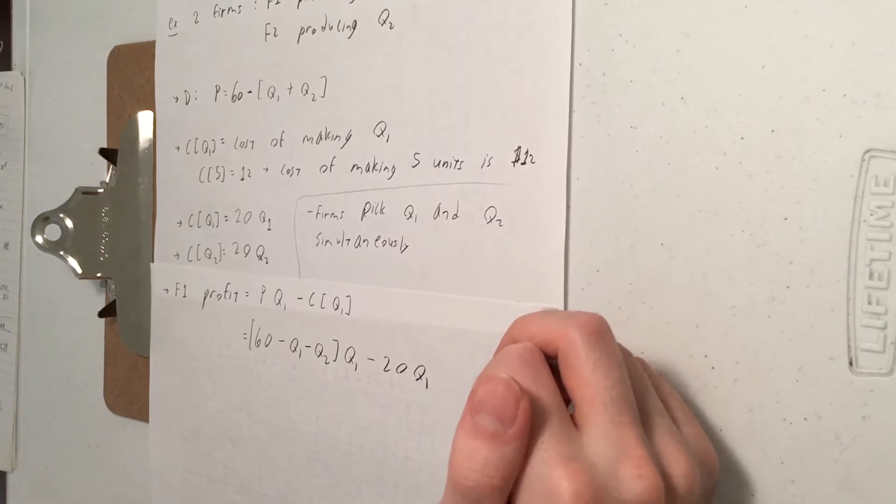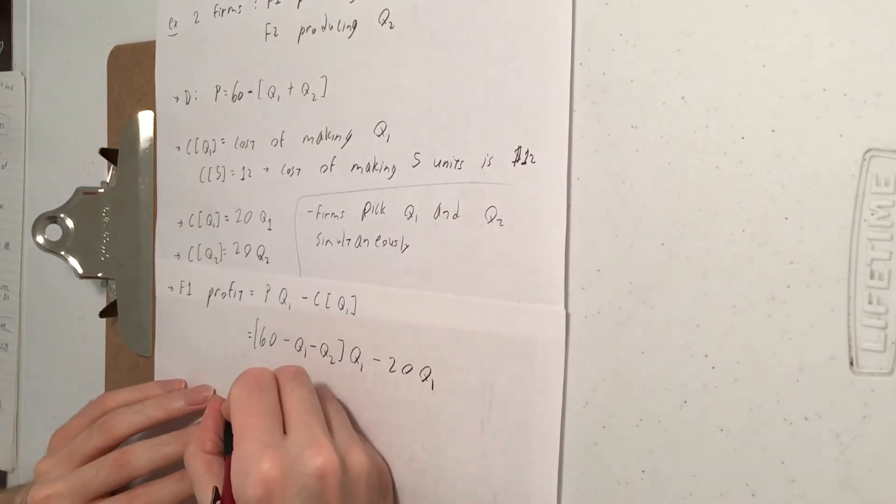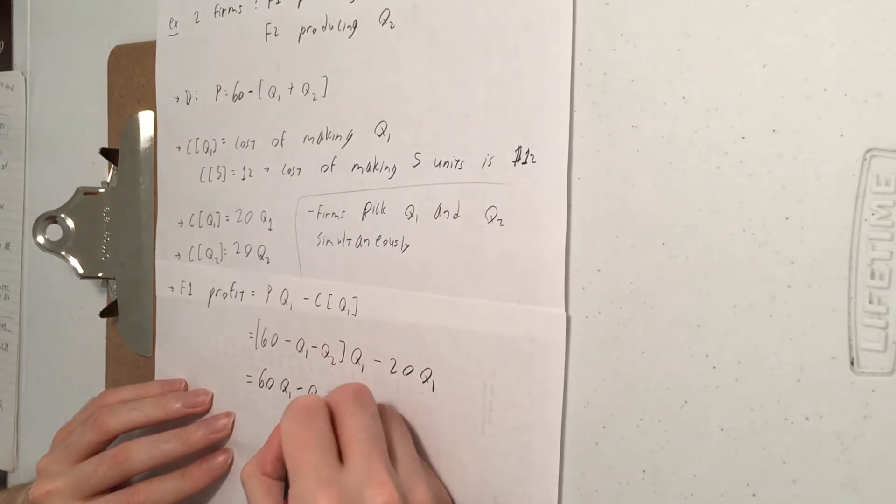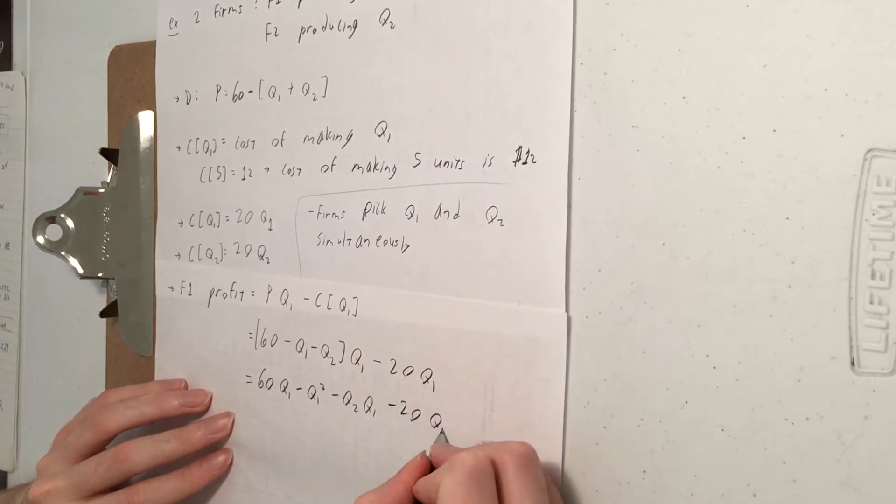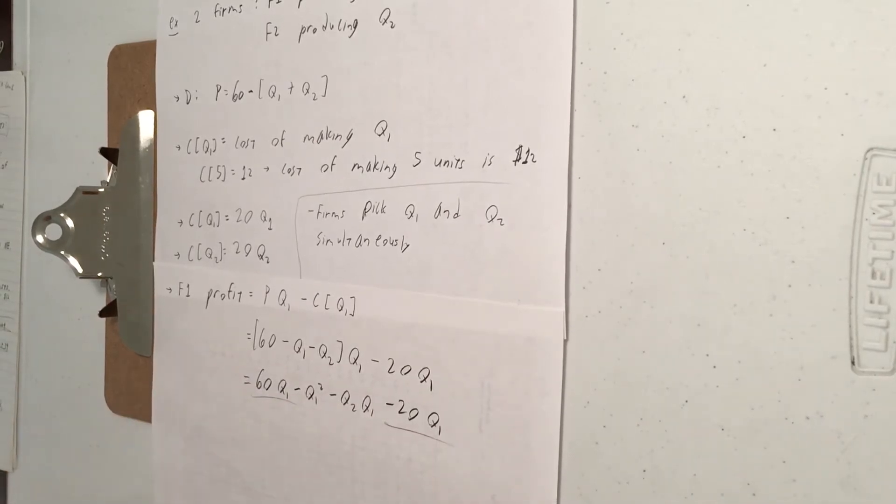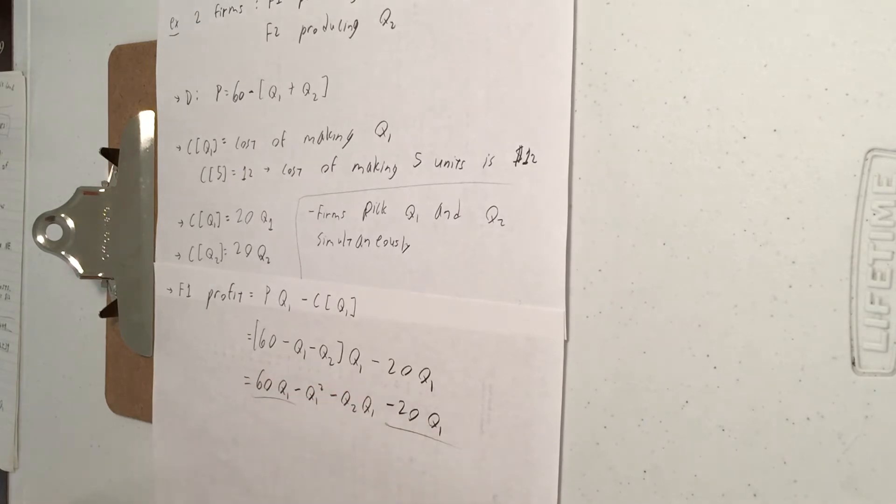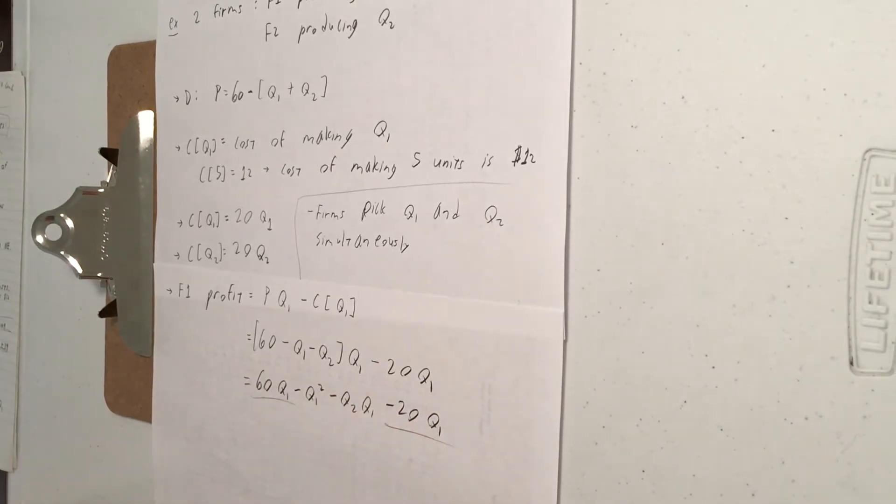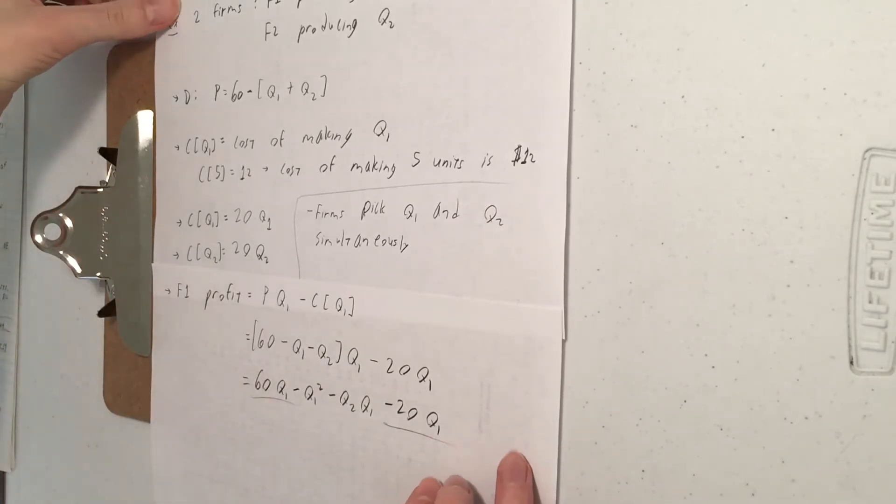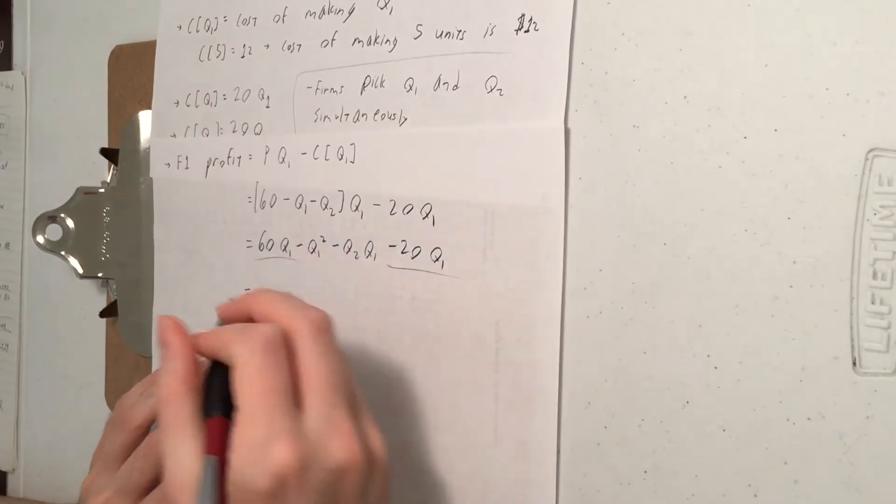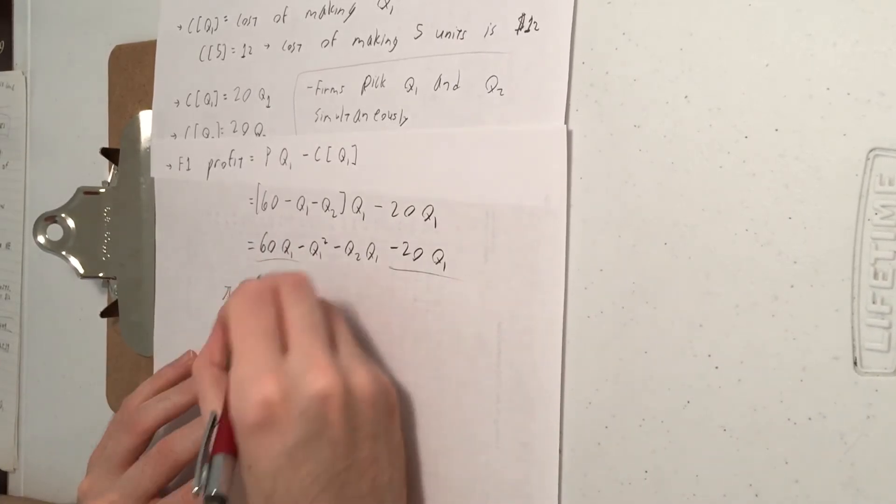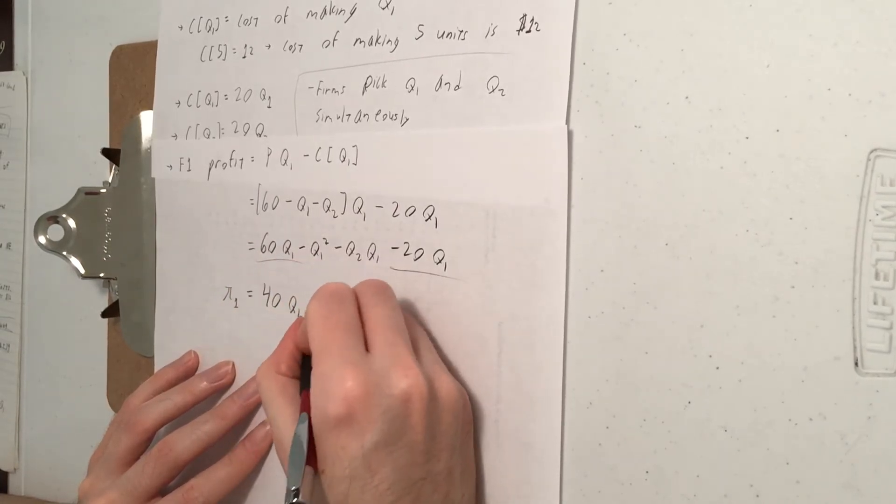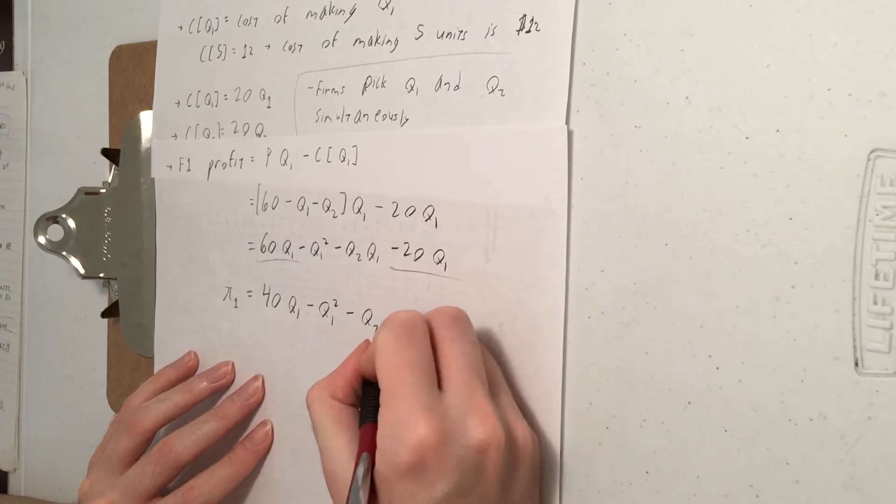So I think it will be a little bit easier if we expand that. So we get 60Q1 minus Q1 squared minus Q2Q1 minus 20Q1. So just distribute this Q1 through here. I can now simplify by combining these two terms here that both have a Q1 in them.